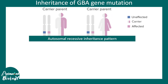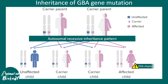When it comes to inheritance pattern, this is an autosomal recessive pattern of inheritance. That means if both parents are carriers — meaning one allele in each parent is faulty — there is a 25% chance that a child in the next generation will be affected.